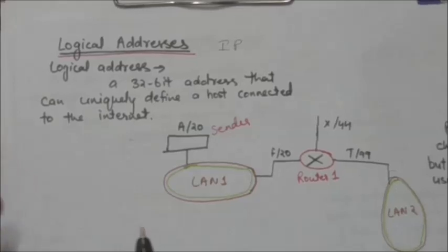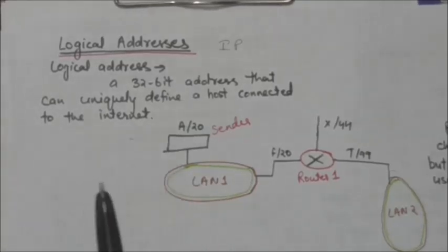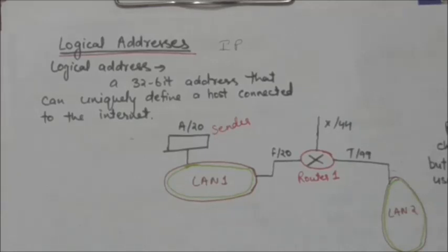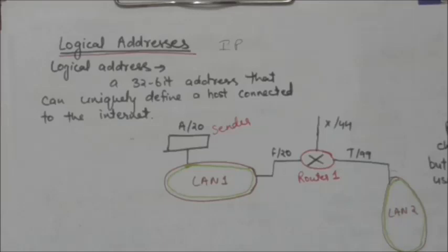In the previous tutorial we studied about physical addresses. Suppose there are two devices connected to the same network and data is to be transferred from one device to another — in that case the physical addresses are enough. But suppose the two devices are connected to separate, different networks — in that case the physical addresses are not enough; here we require logical addresses.